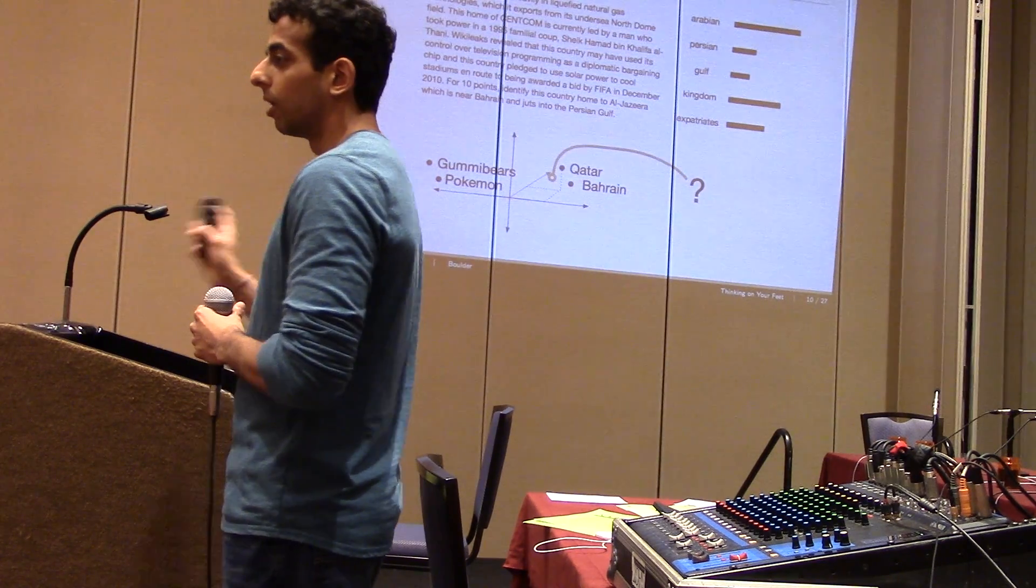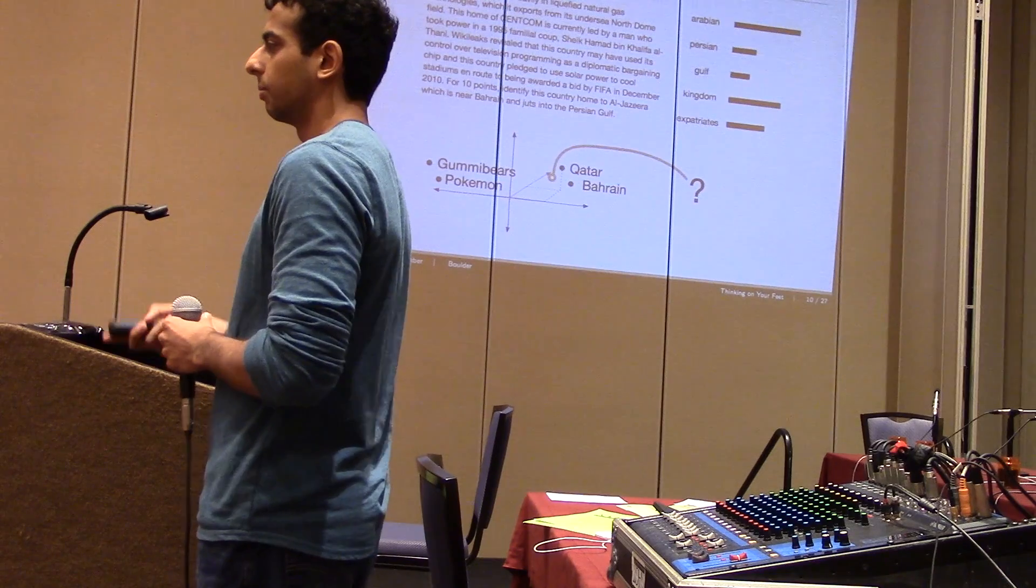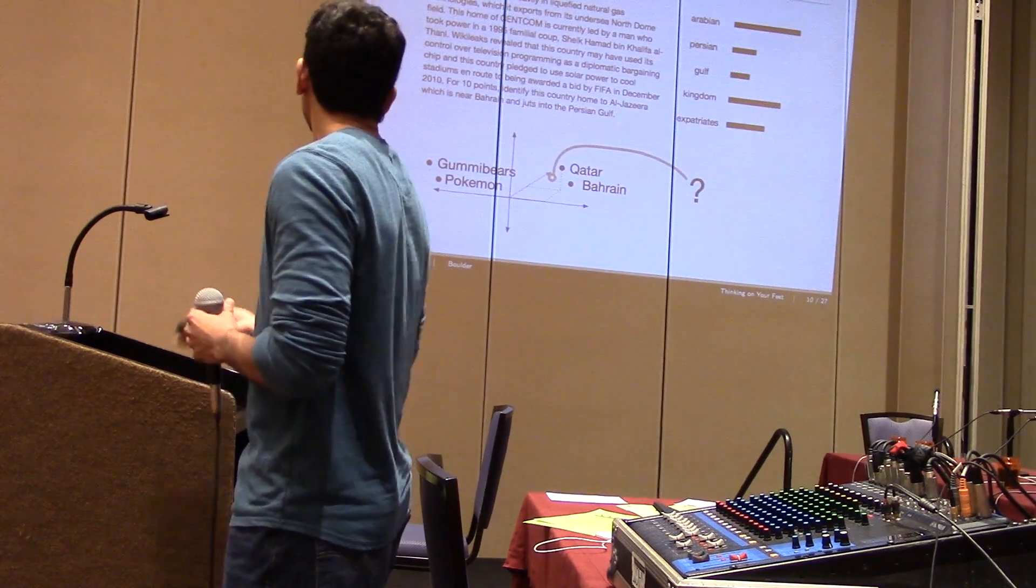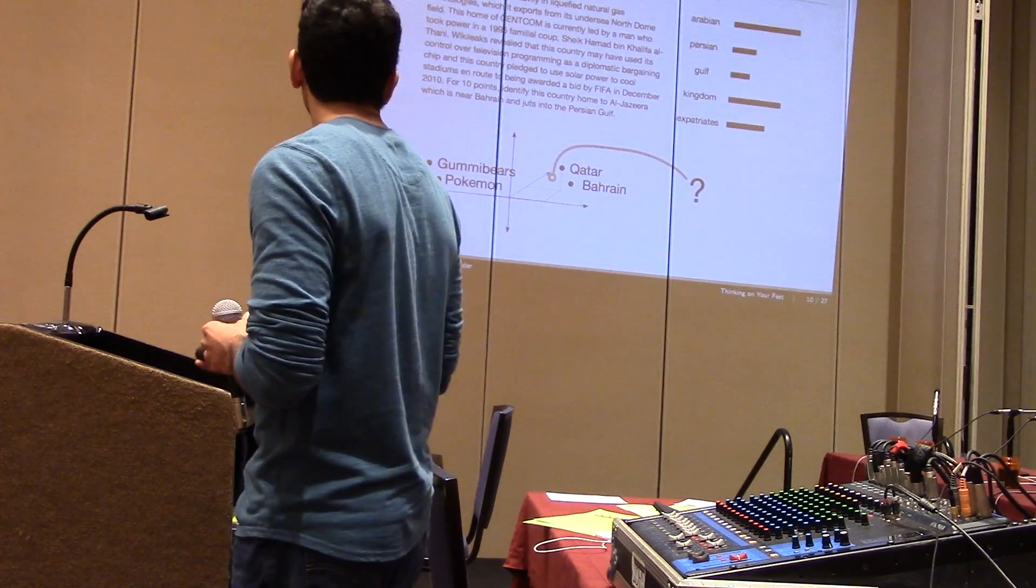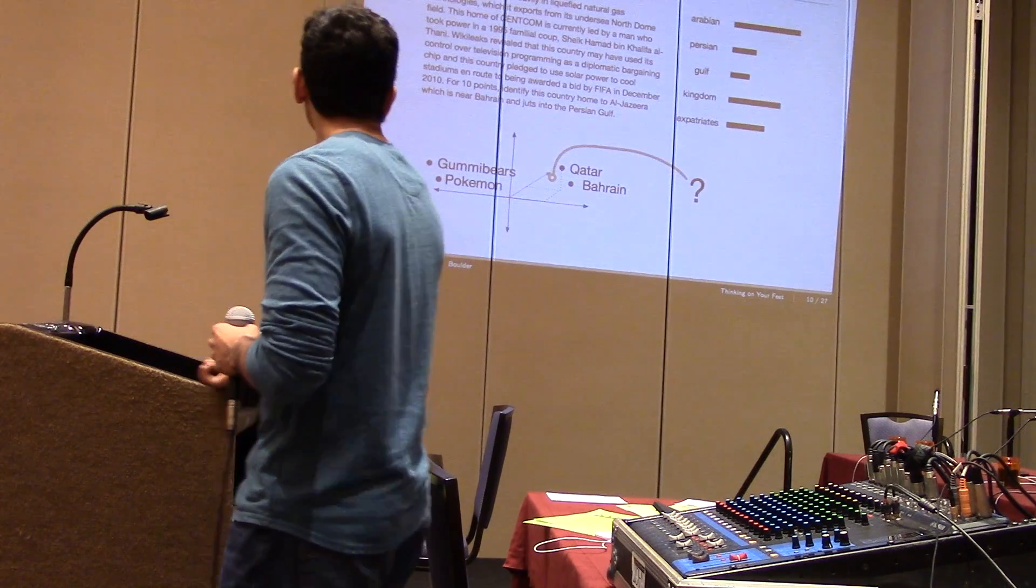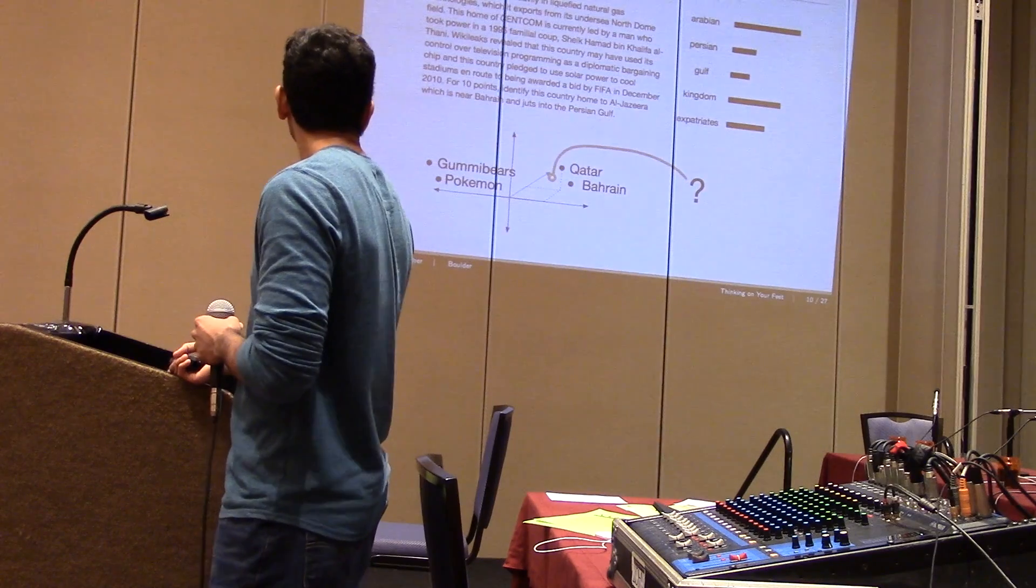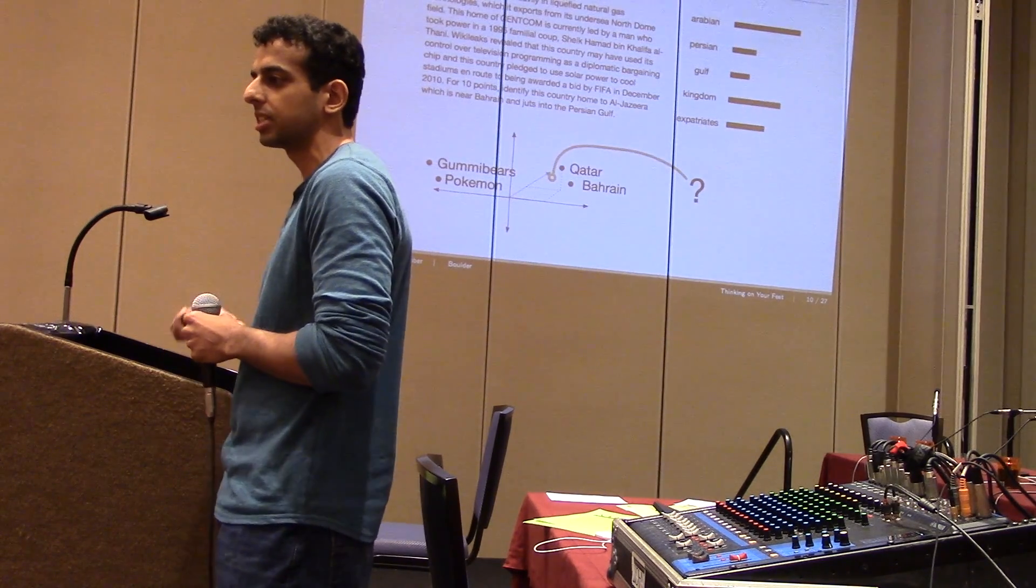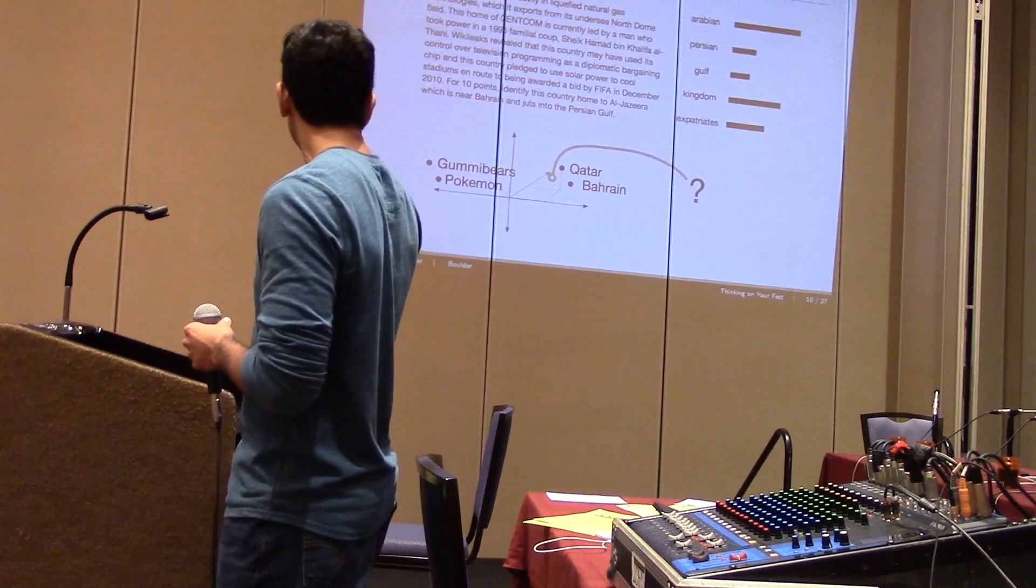And so what we want to do is map the question into the space somewhere close to the reasonable answers, but far away from the obviously incorrect answers. And so all we give our model is quiz bowl question and answer pairs. We don't tell it that Qatar is a country or that Bahrain is close to Qatar. It learns all of these things from just the text of the question. So in particular, it learns here that Arabian, Persian, Gulf and Kingdom, which are words from this question, are important in positioning the question in the space close to the correct answer.